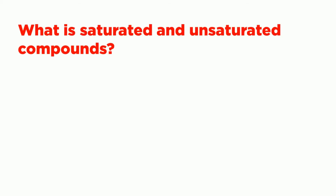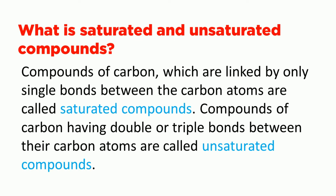What are saturated and unsaturated compounds? Compounds of carbon which are linked by only single bonds between the carbon atoms are called saturated compounds. Compounds of carbon having a double bond or triple bond between their carbon atoms are called unsaturated compounds.